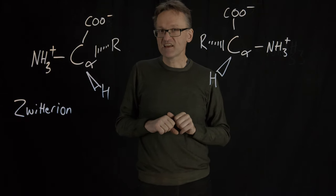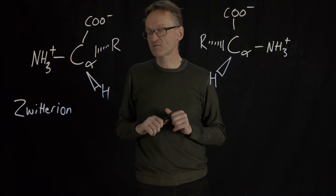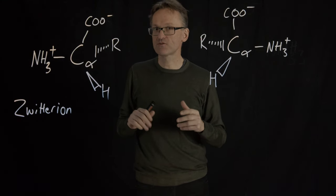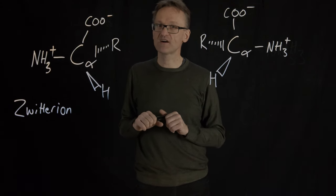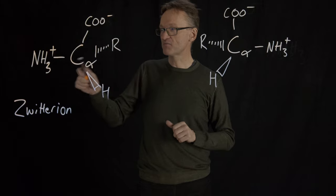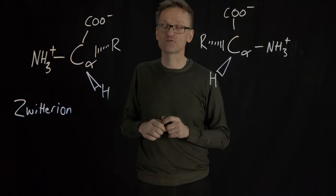The problem with that S and R enantiomer nomenclature is there are very strict rules how to name them, but when it comes to amino acids if we strictly follow those rules, that would mean that some of the amino acids are S forms and others are R forms, while in practice they all look like this. That has to do with naming rules and sulfur for instance.